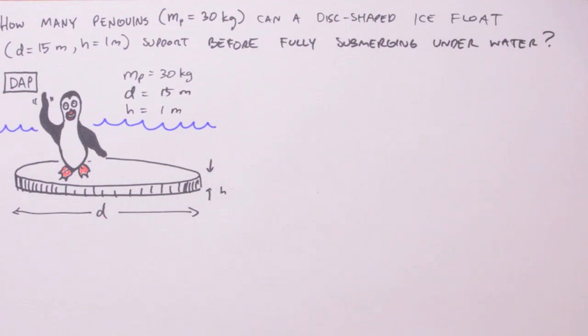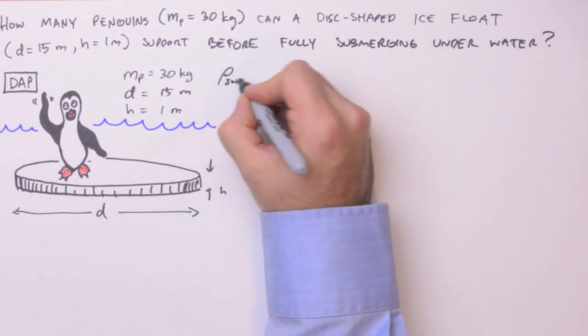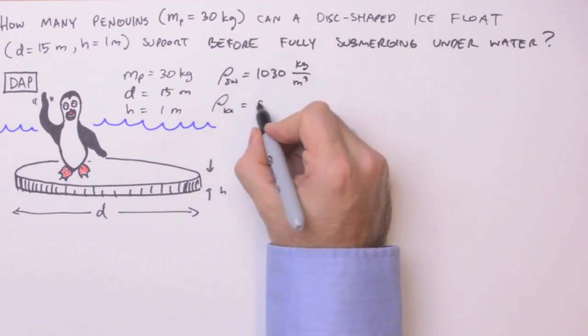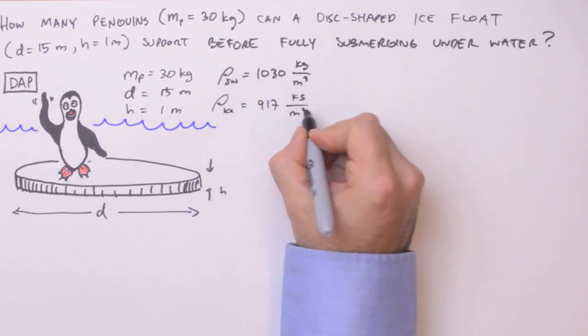Now there are a couple of knowns here that are implied but not given outright, and those are the densities of seawater and ice. So I'm gonna have to look those up. The density of seawater I find is about 1,030 kilograms per cubic meter, and the density of ice is 917 kilograms per cubic meter.